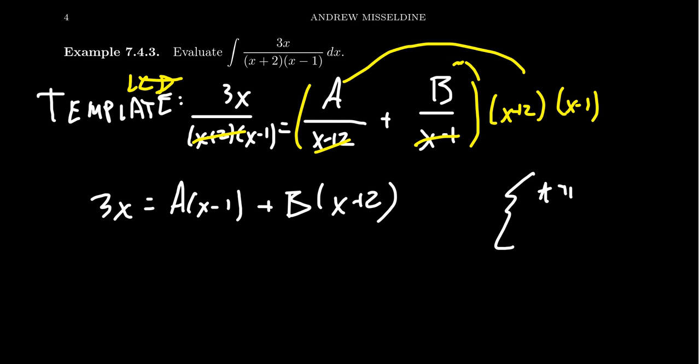A + B equals 3, and then we would also have that -A + 2B equals 0. You could solve that system of equations. It's not too much difficulty to do that.